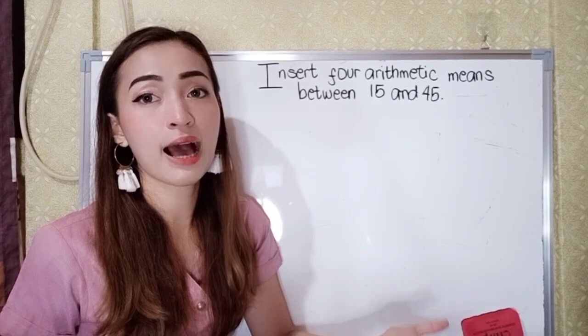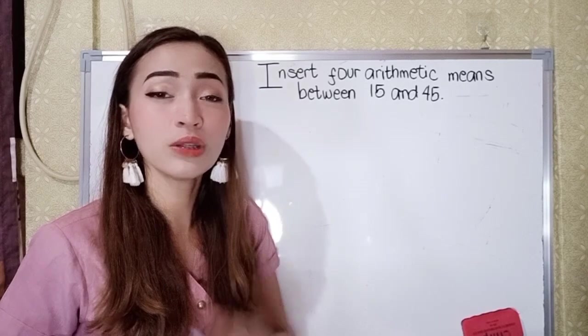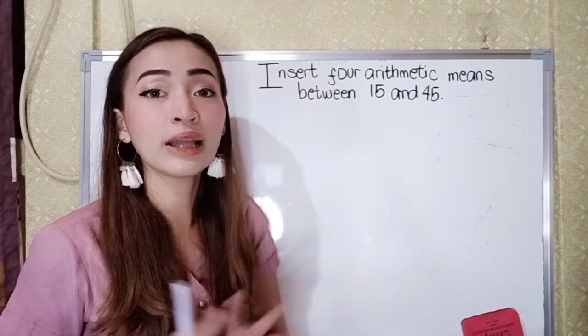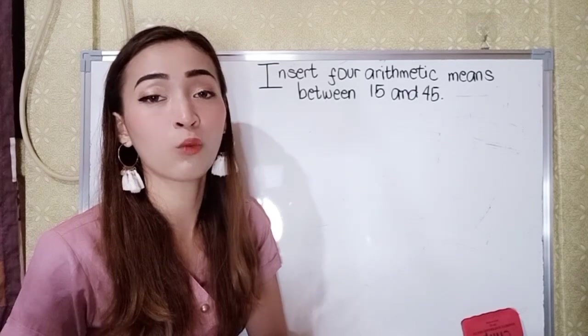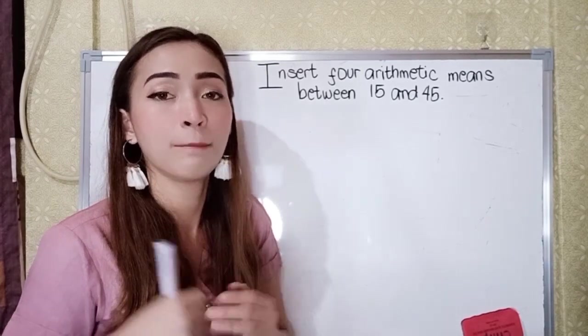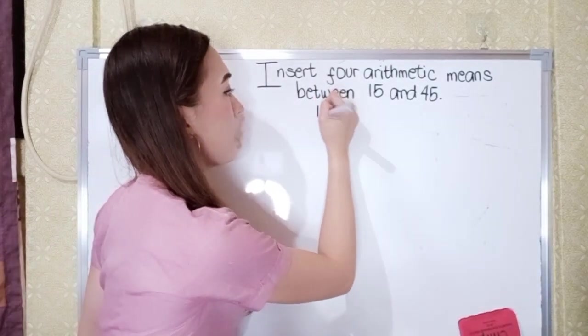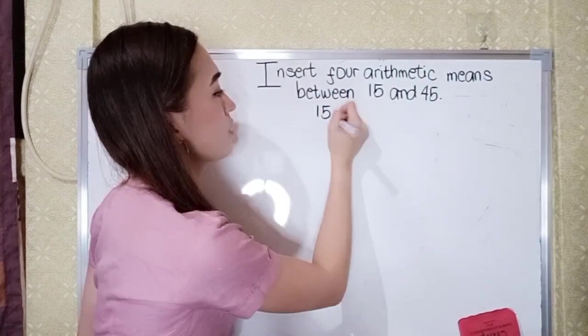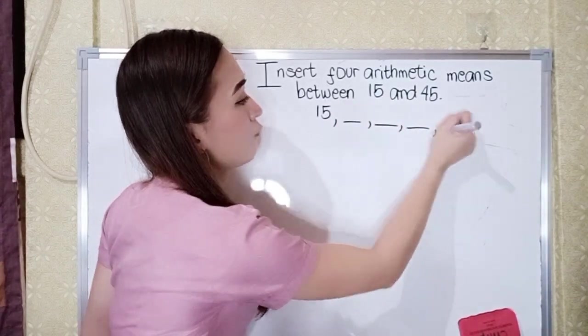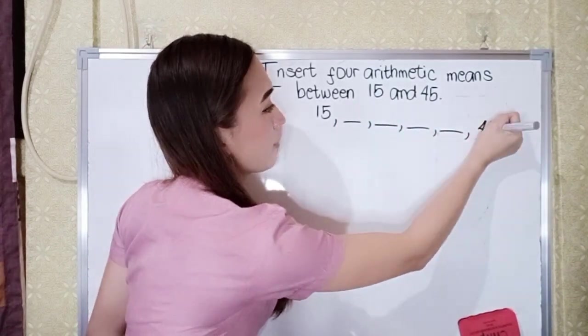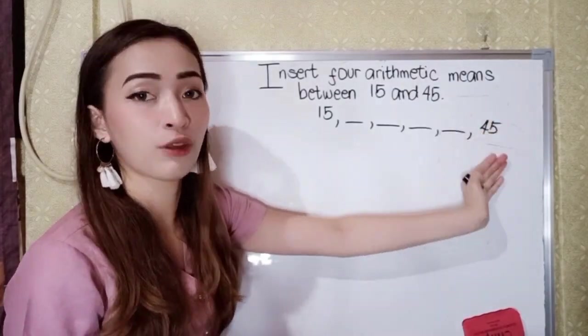For example, we have insert 4 arithmetic means between 15 and 45. So this means, what are the 4 numbers between 15 and 45? So this will be like, what are the numbers from 15? So 4 numbers: 1, 2, 3, 4, and then 45. What are the 4 numbers between 15 and 45?